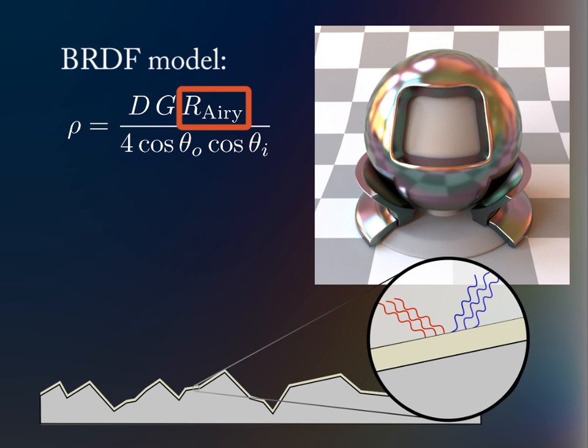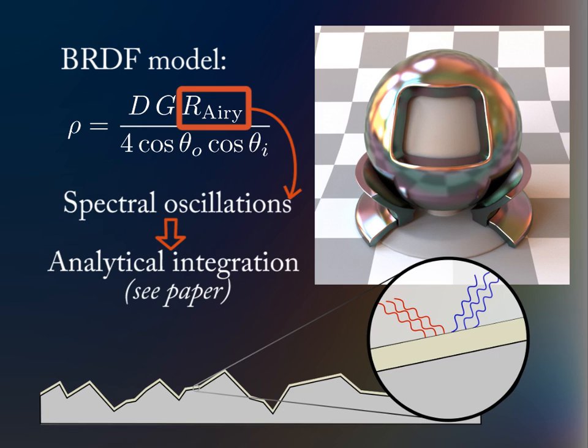The new reflectance term produces high-frequency oscillations in the spectral domain. Our main contribution is to provide an analytical spectral integration of these oscillations, which permits use of R extension at a negligible cost.